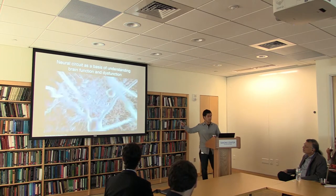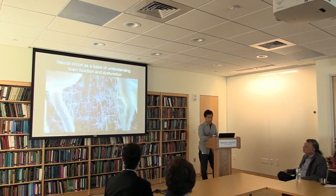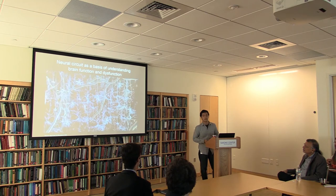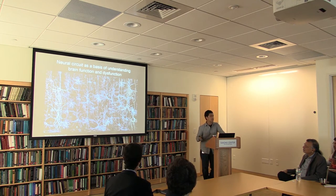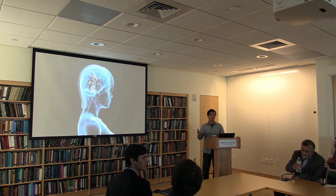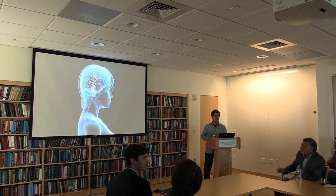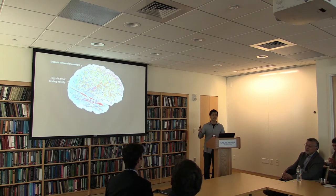We neuroscientists ultimately ask how the neural network produces functional outcomes such as cognition, emotion, motivation, and bodily responses, and how its dysfunction leads to neurological and psychiatric disorders. One of the primary goals of neuroscience is to map the entire anatomical connectivity in the neural network and to identify the function of each neural circuit element.